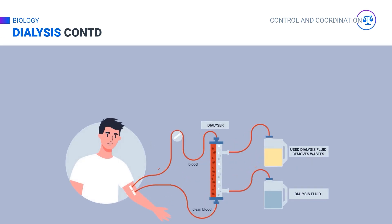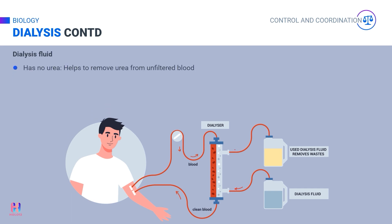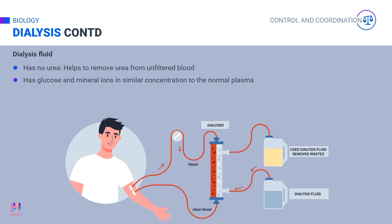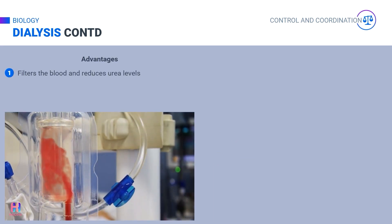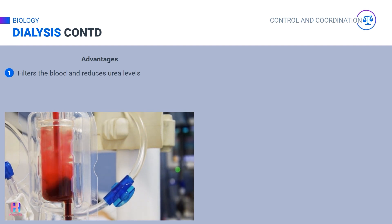The dialysis fluid acts as a replacement for the blood plasma present in our body near the kidney tubules. It does not contain urea so that urea can be removed from the unfiltered blood. The concentration of glucose and helpful mineral ions is just like that seen in normal plasma, so these levels can be maintained in the blood sent back to the body. This process helps filter the blood and reduces the amount of urea, preventing its buildup.